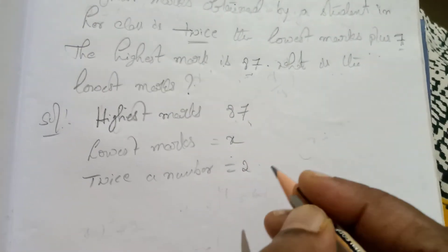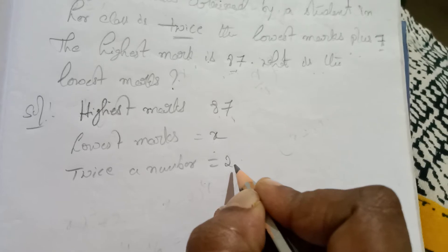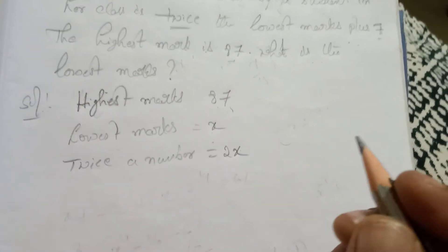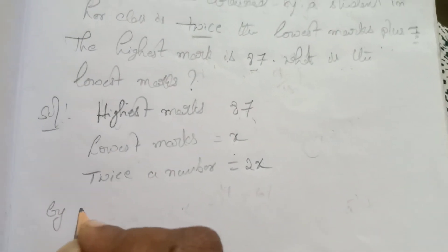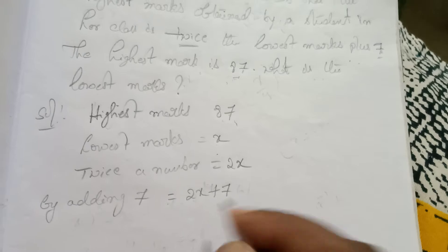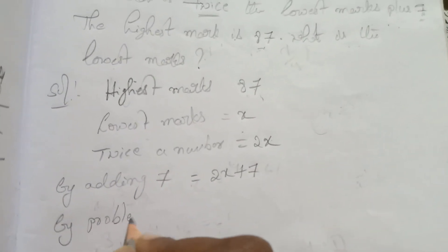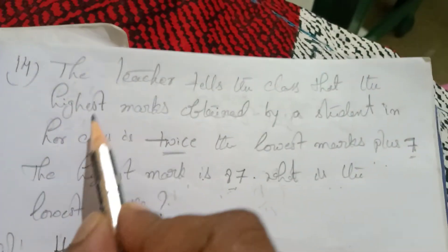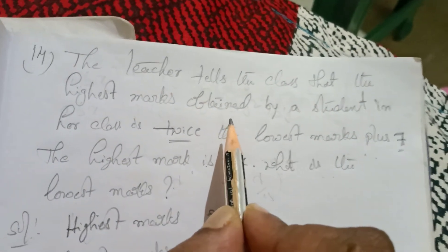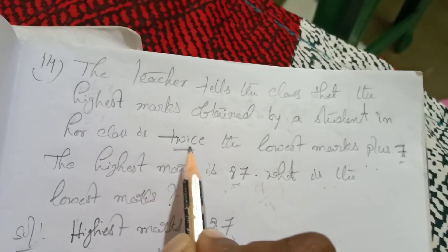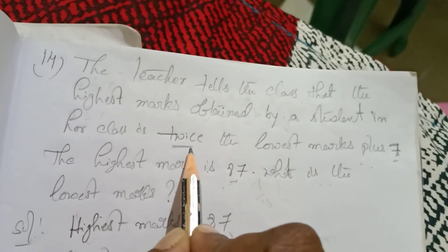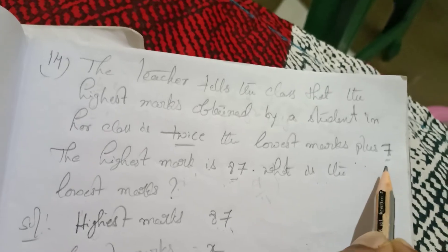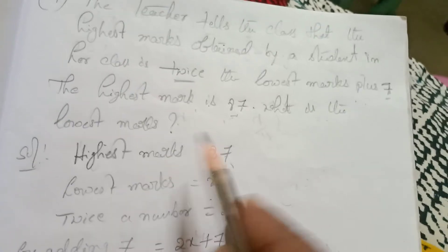The highest marks is 2 into x, that is 2x. By adding 7, we get 2x plus 7. According to the problem, 2x plus 7 is equivalent to the highest marks. Highest marks is 87. So the equation is 2x plus 7 equal to 87.